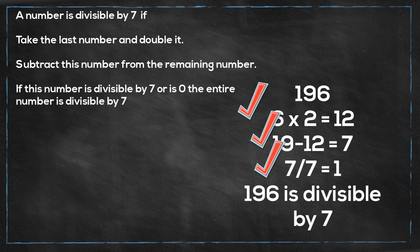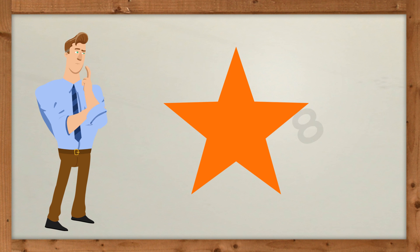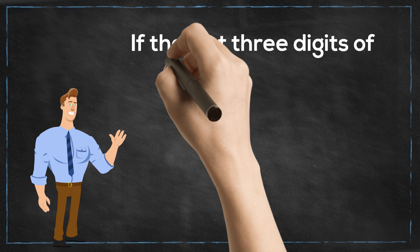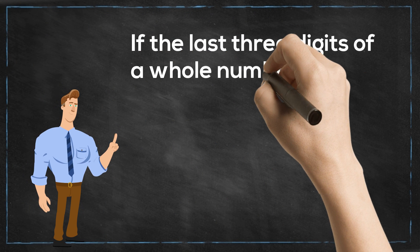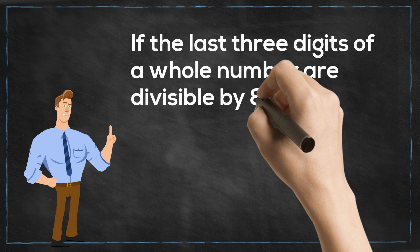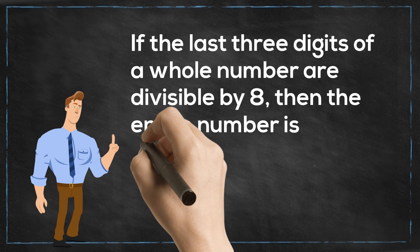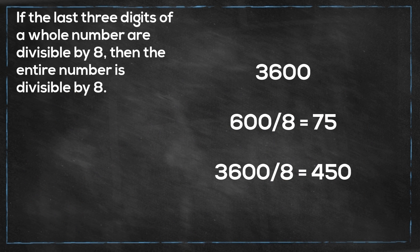Up next is 8. If the last three digits of a whole number are divisible by 8, then the entire number is divisible by 8. For example, let's look at 3600 — the last three digits are 600, and 600 divided by 8 is 75, therefore 3600 is divisible by 8.